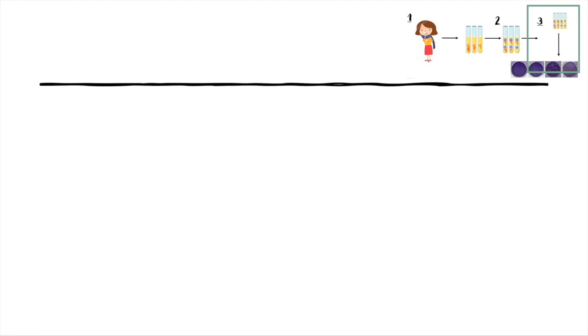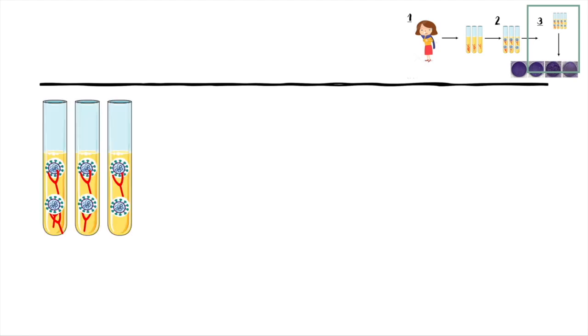So then we have the different serial dilutions of the patient serum with the antibodies and the virus, and we also have a control tube with no antibodies, just the virus, for comparison. One of the methods to check the infectiousness of the virus is a plaque assay.